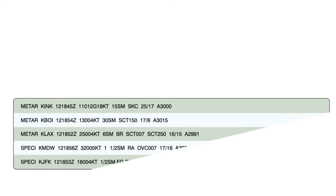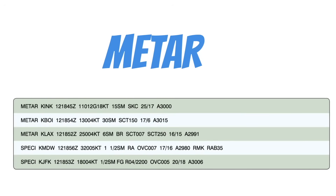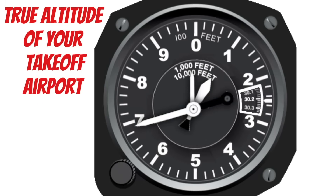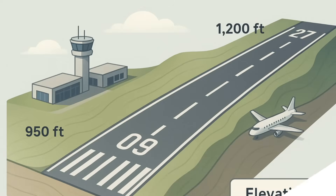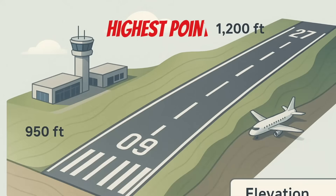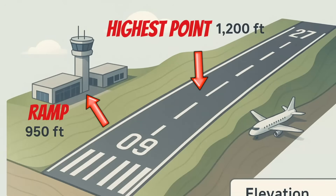As most of you already know, if you can't get the local altimeter setting from the METAR or another source like the ATIS, the right thing to do is to dial in the true altitude of your takeoff airport into the altimeter. As a VFR pilot, you probably found yourself using the field elevation from the chart supplement or the VFR sectional. But if you're going to be flying on instruments, this may not always be the most accurate setting, because the field elevation is the highest point on the airport's usable runways. If you set the field elevation at the ramp, this could cause you to be off your altitude a little bit.